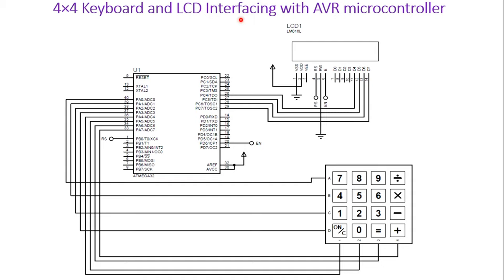Now, 4x4 keyboard and LCD interfacing with AVR microcontroller. This schematic explains the connection of both the LCD and the 4x4 keyboard matrix. We have one 4x4 keyboard with rows A, B, C, D forming the output, and columns 1, 2, 3, 4 as the 4 columns.